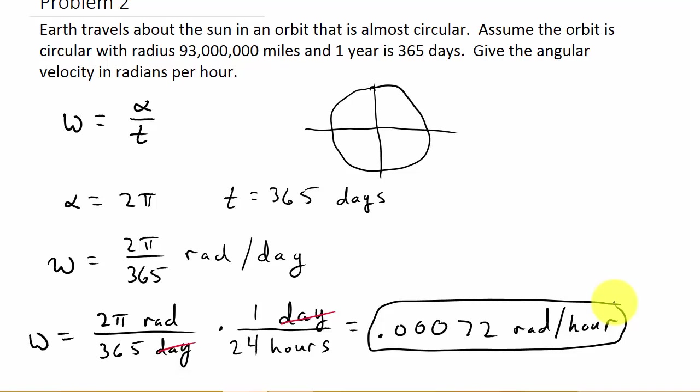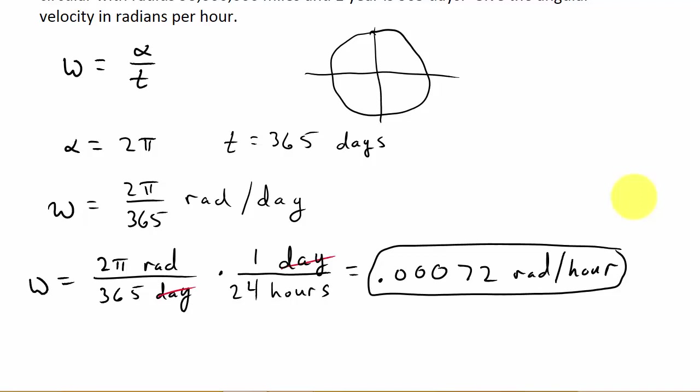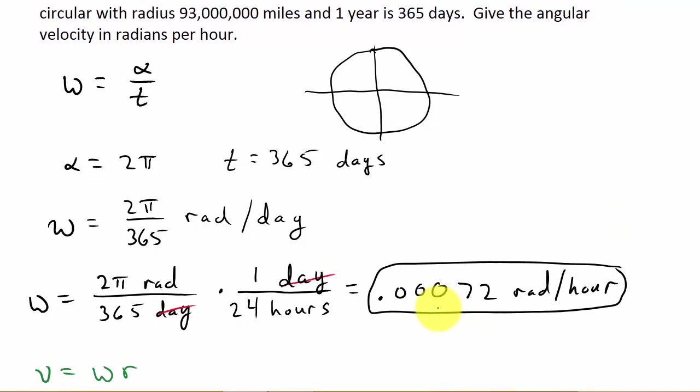Now, let me mention one thing. Sometimes these problems also ask you to find linear velocity. I'll do some linear velocity examples in other videos. But there's a few different formulas for linear velocity. But the reason I bring it up here is because one of the formulas for linear velocity is the angular velocity times the radius. So I've got the angular velocity and I have the radius. So I can actually find the linear velocity.